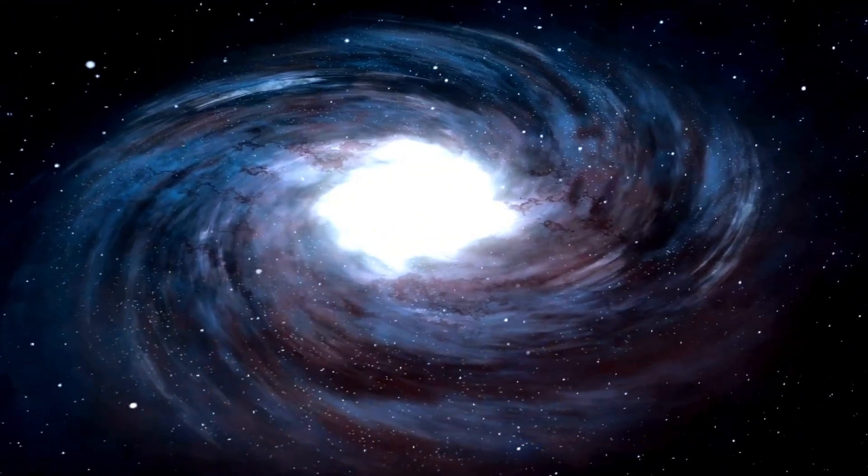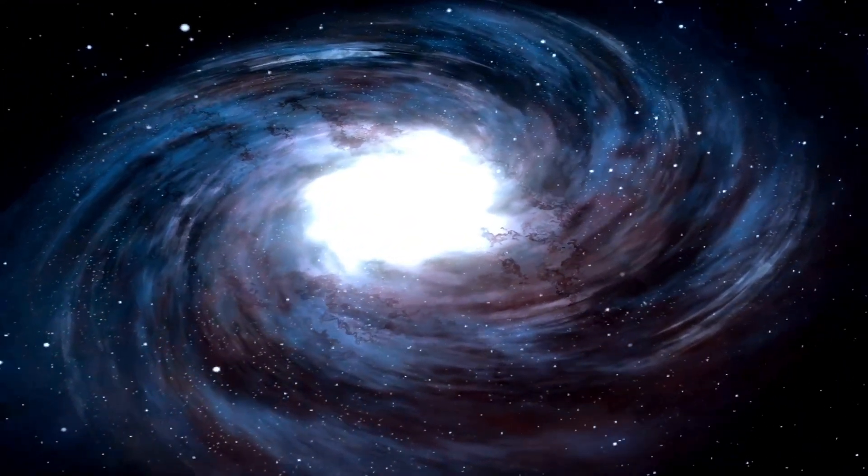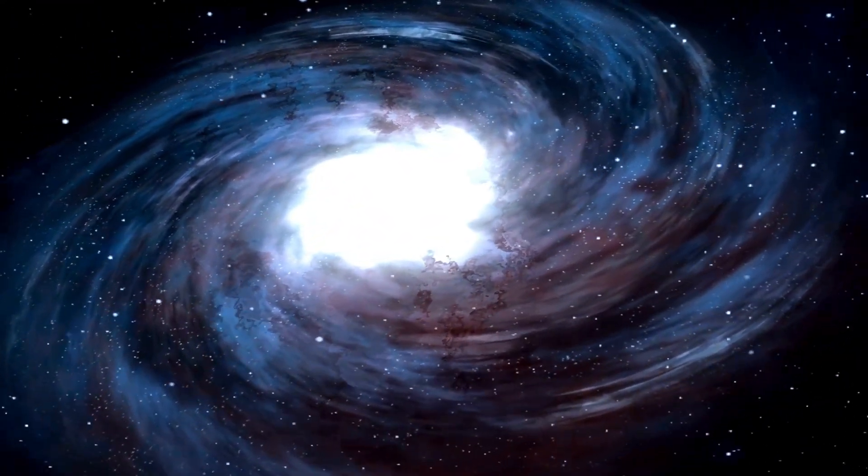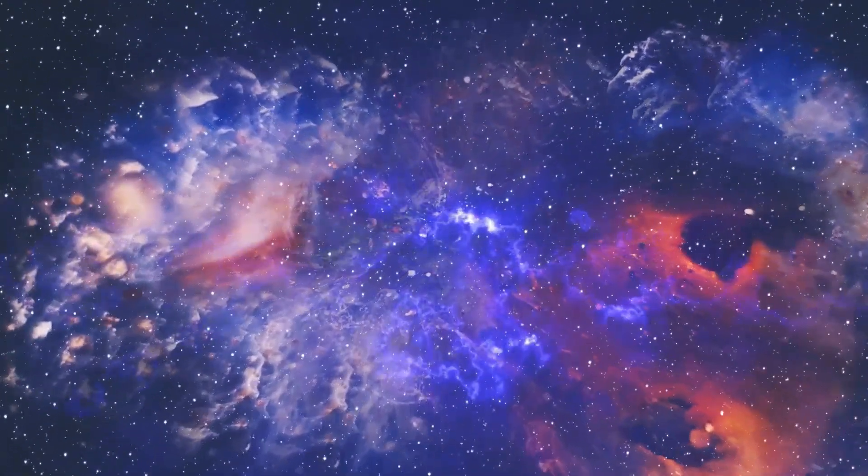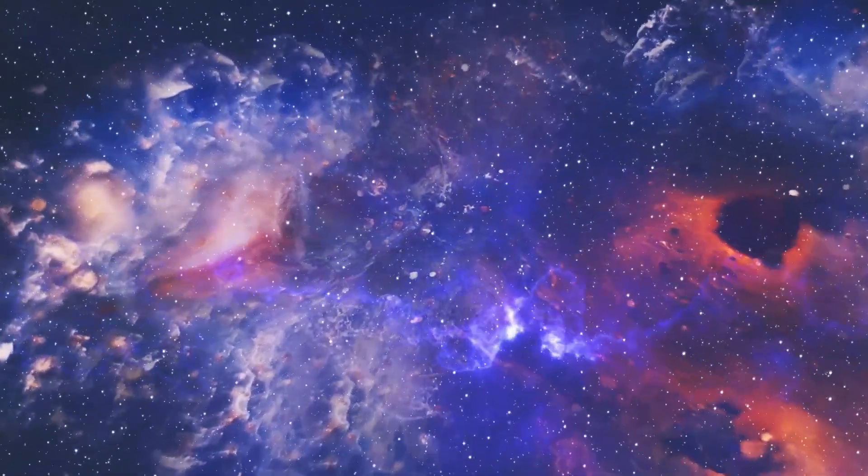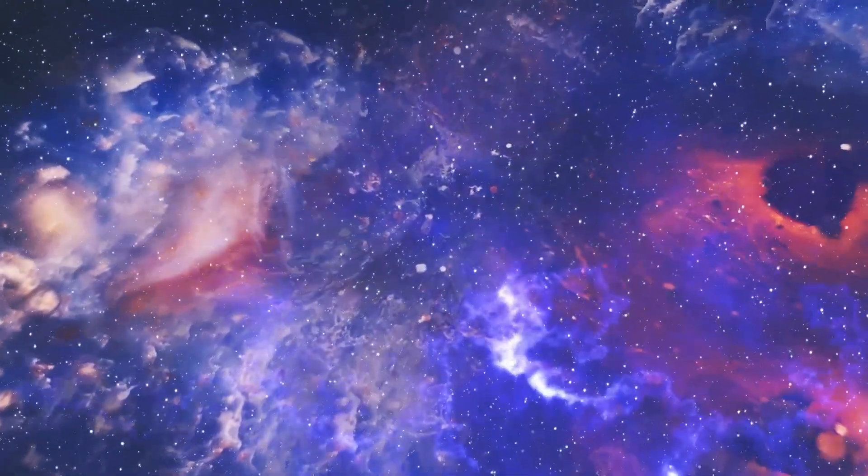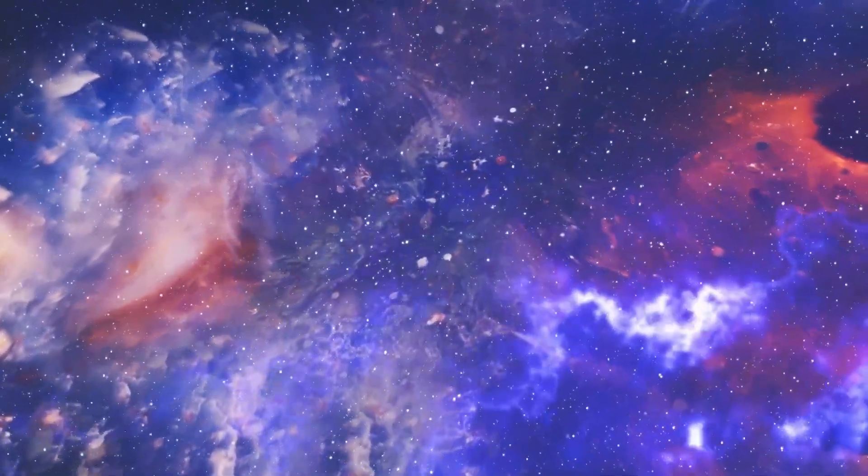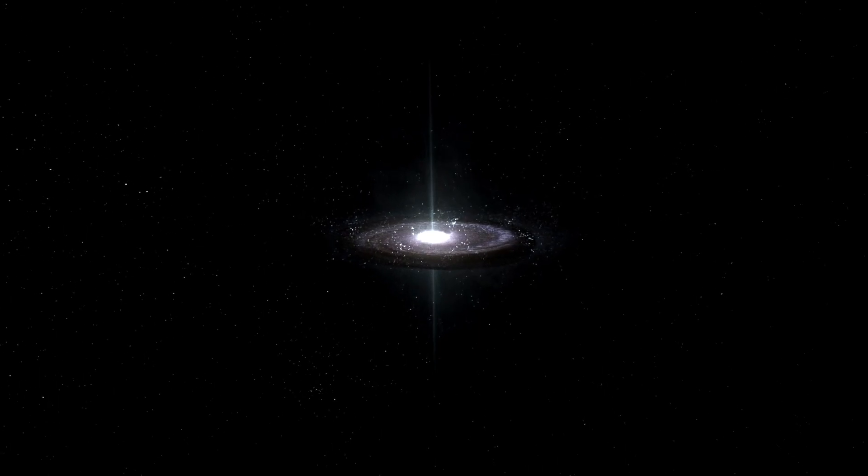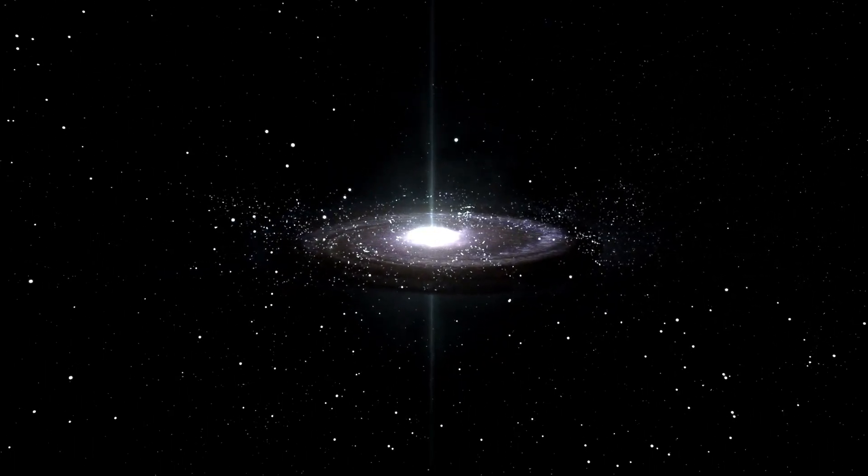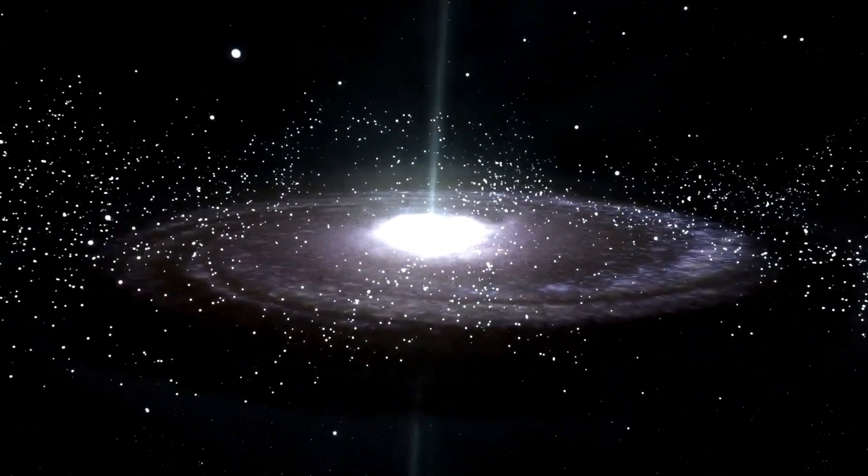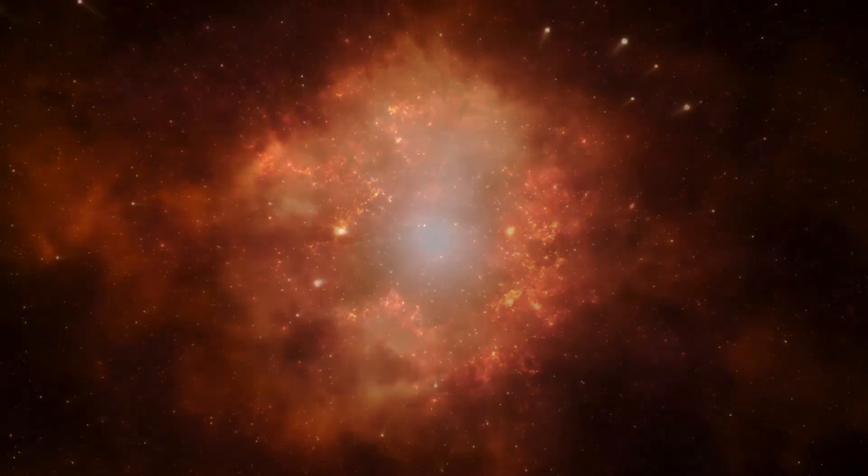Although Betelgeuse is currently a red star, it wasn't always this color. About 10 million years ago, it was yellowish, much like our sun. Over time, its color changed to orange, red, and approximately 1 million years ago, it began transforming into the red supergiant we see today. This aging process has led scientists to believe that Betelgeuse is nearing the end of its life cycle.